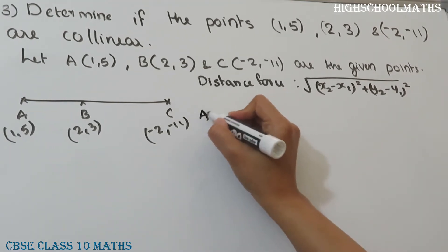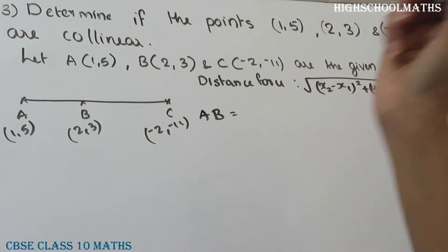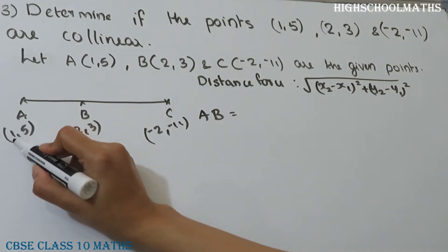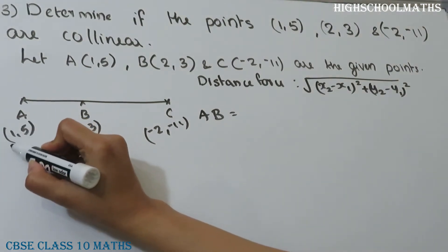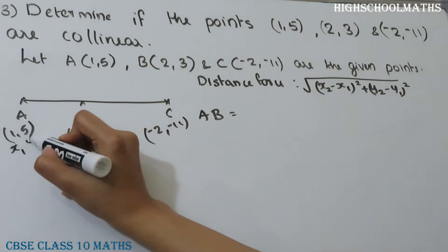The distance formula is: the square root of (x2 - x1) squared plus (y2 - y1) squared. Now we apply this. First, let's find AB.